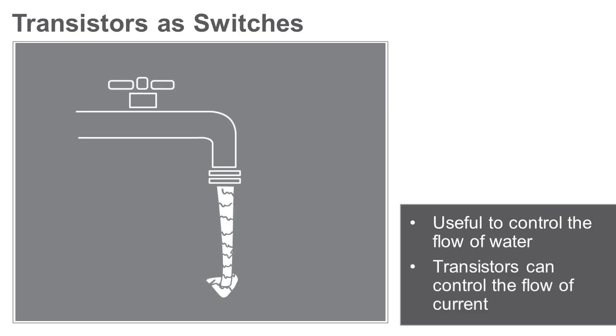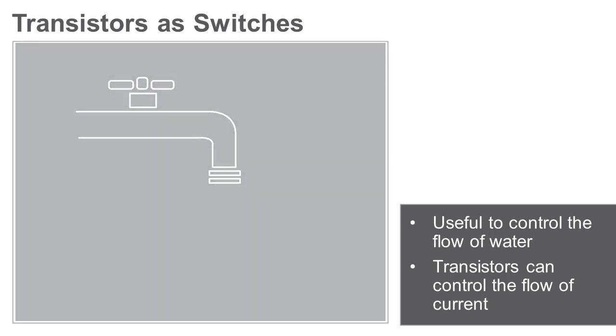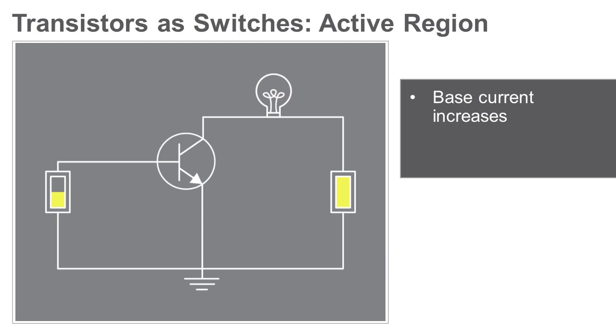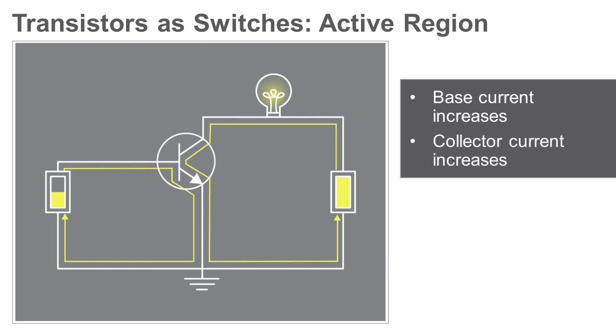In a transistor, you can change the current through the base and a corresponding amount of current will flow through the collector. When the base current increases, the collector current increases. And likewise, when the base current decreases, the collector current decreases.